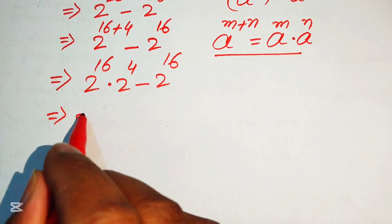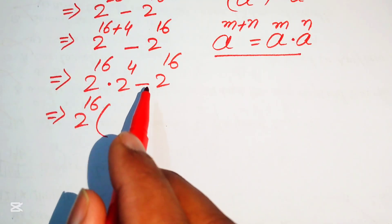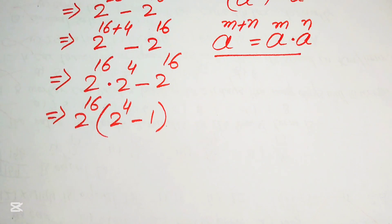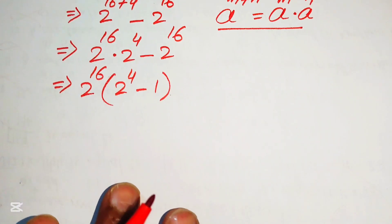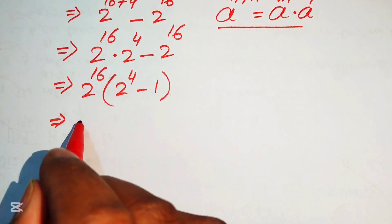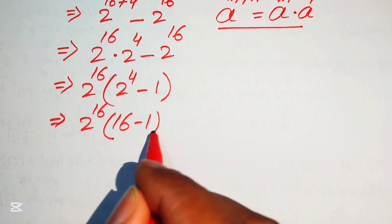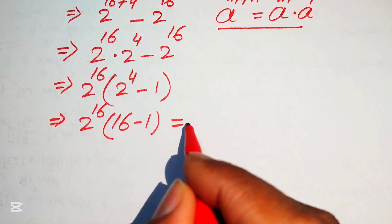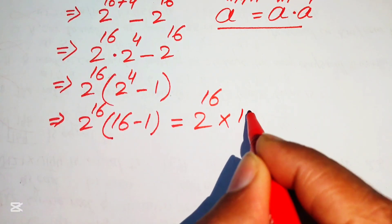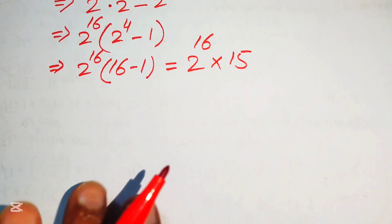We take 2 to the power of 16 as a common factor. The remaining terms are 2 to the power of 4 minus 1. Since 2 to the power of 4 equals 16, this becomes 2 to the power of 16 multiplied by 16 minus 1, which equals 2 to the power of 16 times 15.